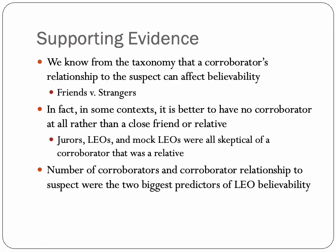From the taxonomy, a corroborator's relationship to the suspect can affect believability. Friends are less believable than strangers, and in some contexts it's even suggested it's better to have no corroborator at all rather than a close friend or relative. Jurors, law enforcement officers, and mock law enforcement officers were all skeptical of corroborators who were relatives. In one study, a defense attorney said, 'I don't ever call them — they always lie. I'm not going to waste my time investigating an alibi if a mom or a girlfriend is involved.'